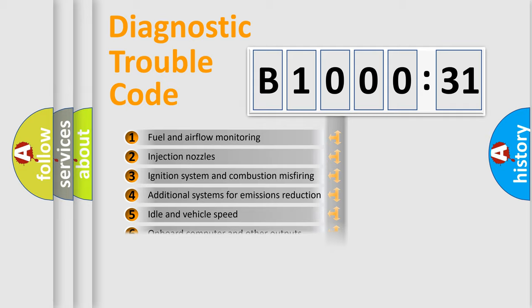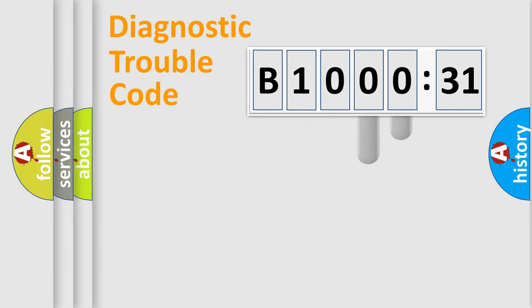The third character specifies a subset of errors. The distribution shown is valid only for the standardized DTC code. Only the last two characters define the specific fault of the group.